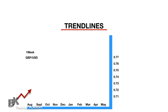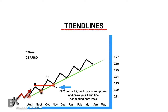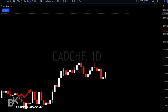Here's my demonstration of trend lines. We have our low connected to our high. Price pulls back to our higher low, then goes to a higher high, then to a higher low — and it retests back to our previous high, giving a straight line showing us where we may want to buy. We buy on the higher lows in an uptrend and draw the trend line connecting both lows.